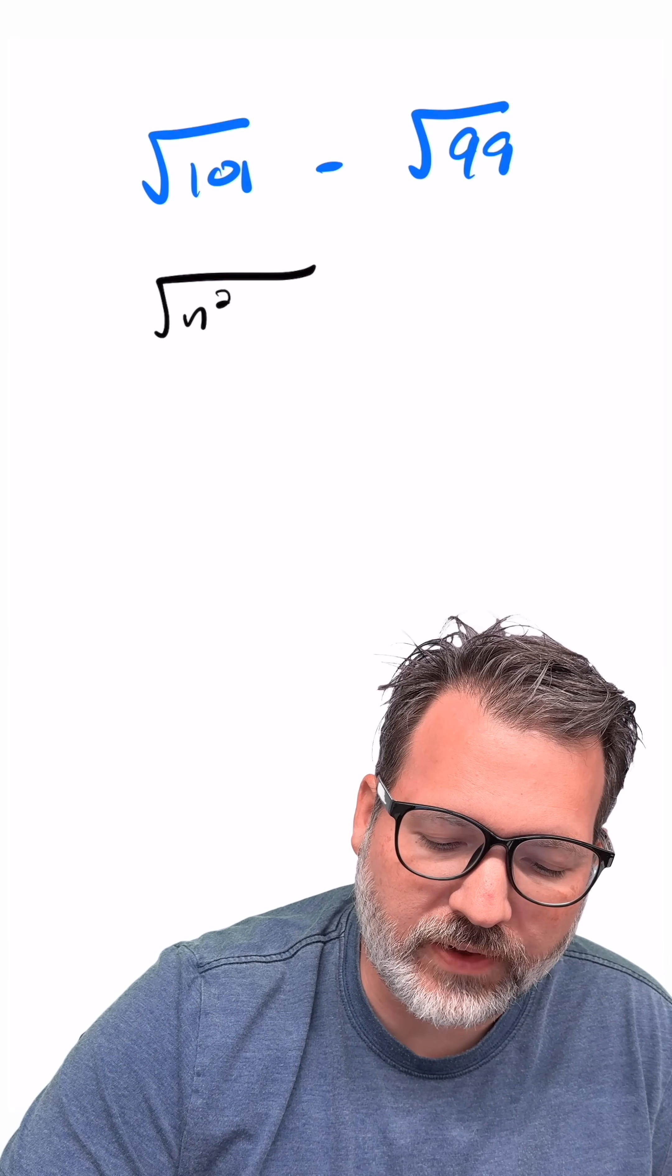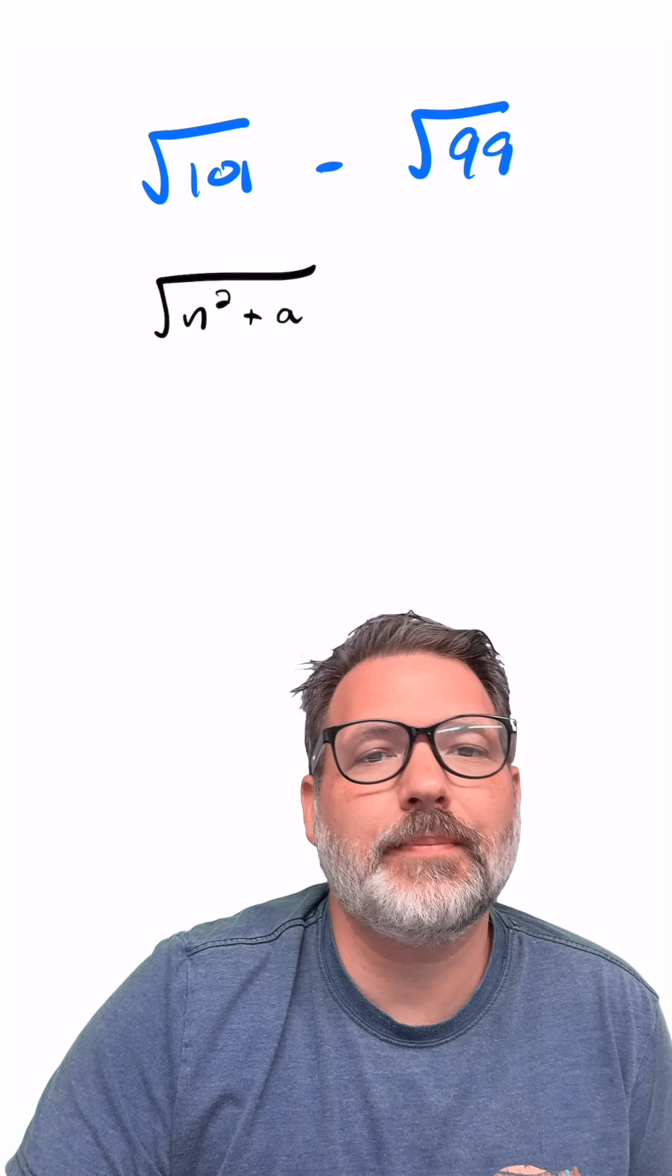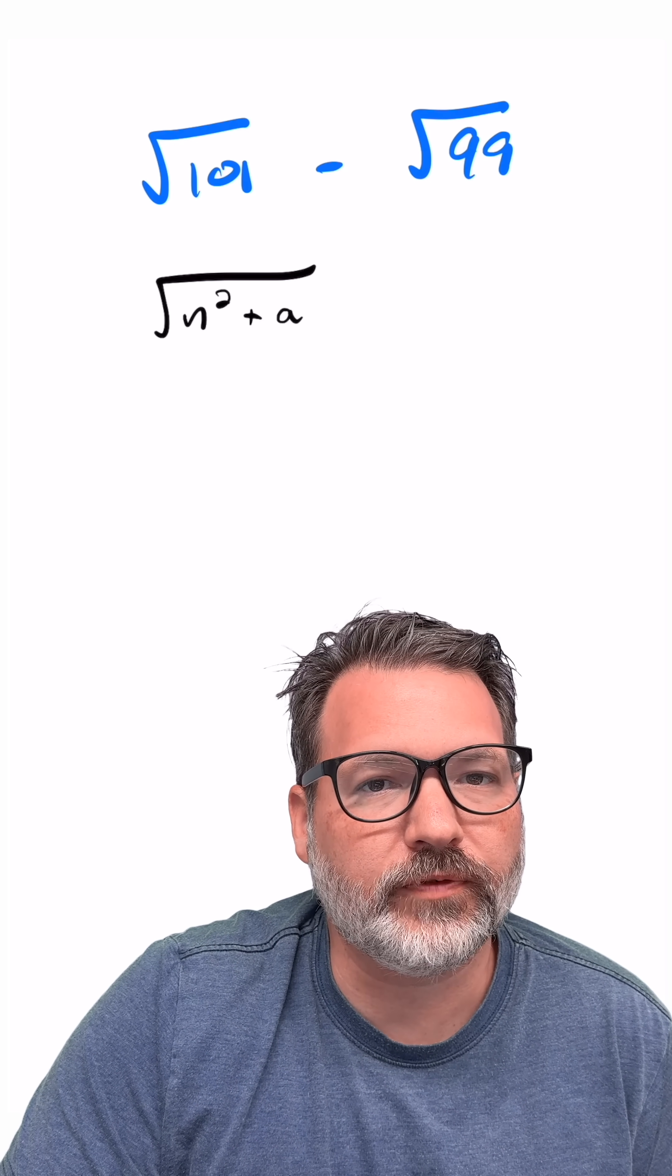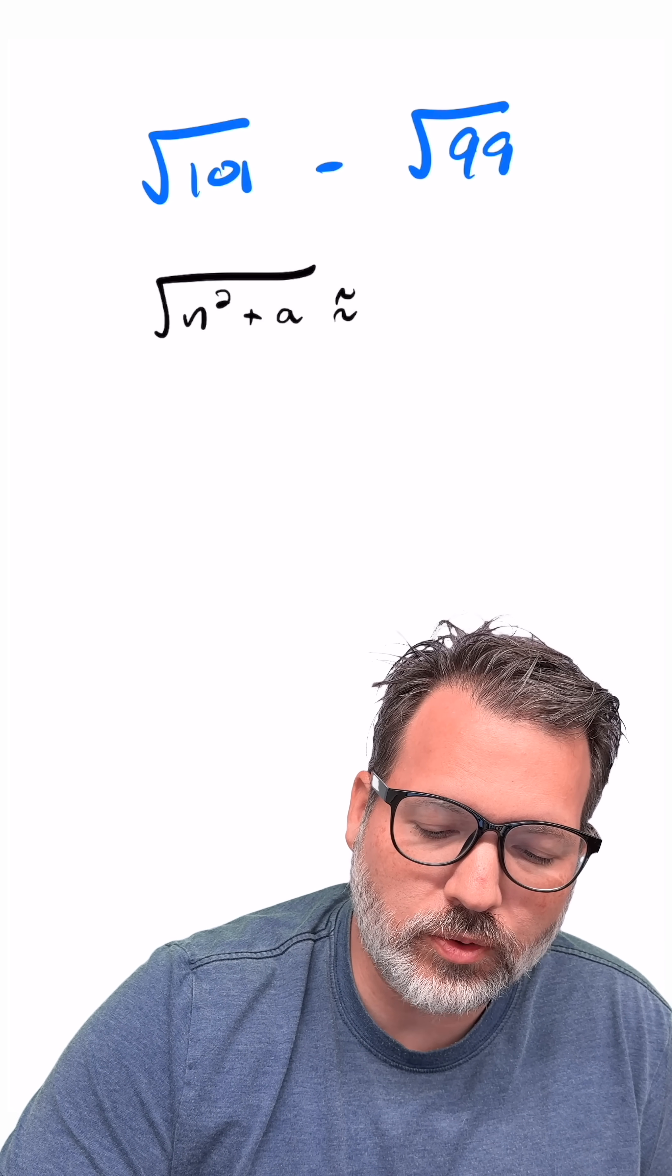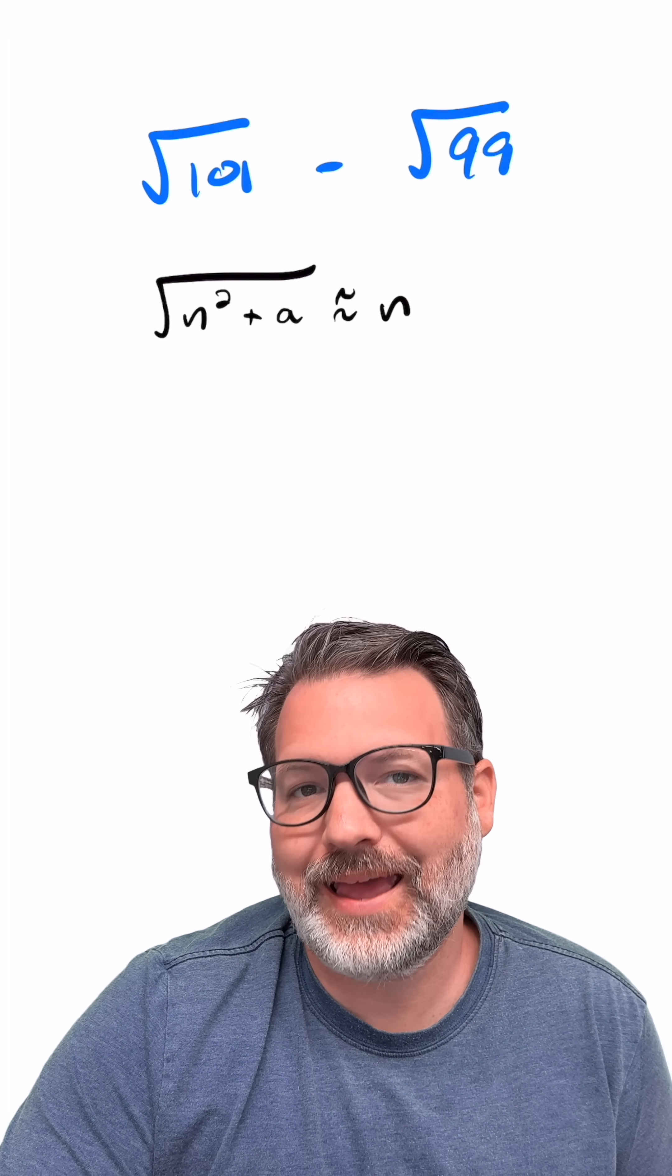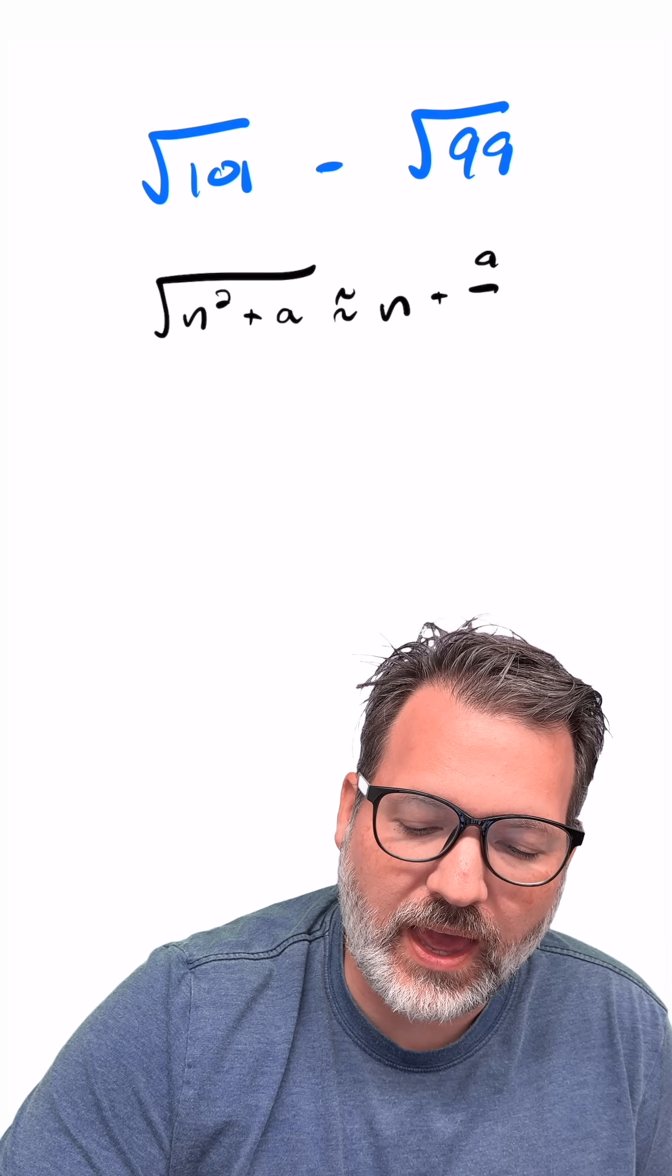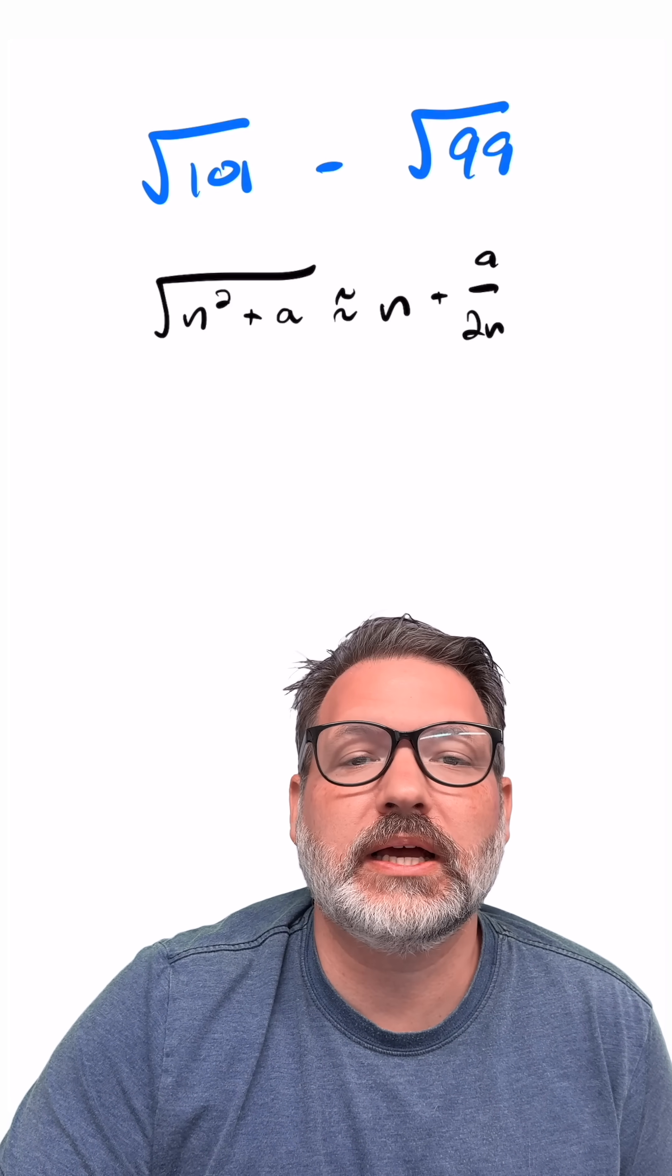But again, we're close, right? We don't have exactly the perfect square. We are some a units away from our perfect square, where a is small compared to n squared. So long as that's true, we can always estimate this as n plus that value of a divided by 2 times n.